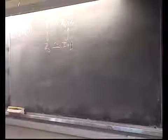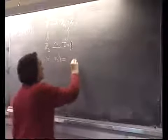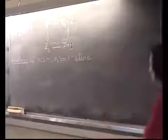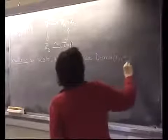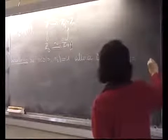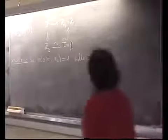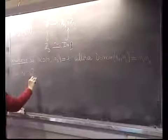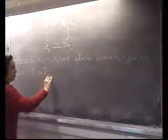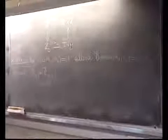Possiamo scrivere un corollario. Se il massimo comune divisore tra n1 e n2 è uguale a 1, allora il minimo comune multiplo tra n1 e n2 è il prodotto: se due numeri sono coprimi, il minimo comune multiplo è il loro prodotto. Quindi Zd, che è Zn1·n2, ha n1 per n2 elementi.